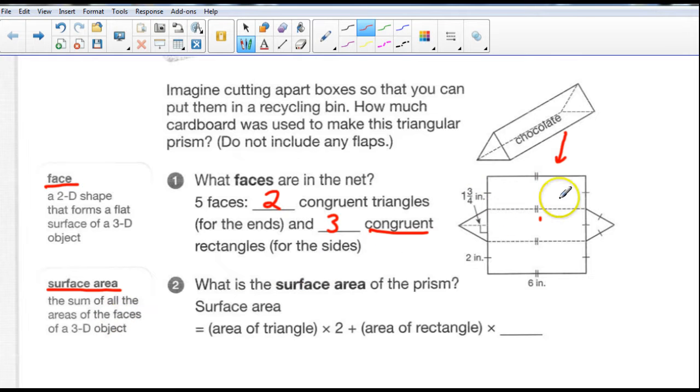So you can see we have 5 faces here and we want to find the surface area of each one of those faces and add them together. So, what is the surface area of the prism? Well, the surface area is just the area of the triangle. One triangle. We have 2 of them so we multiply it by 2. And we add the area of the rectangle and we multiply that by 3 because we have 3 rectangles.